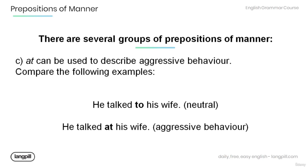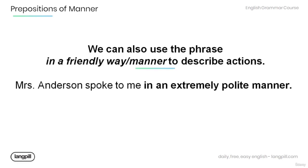Group C: 'at'. 'At' can be used to describe aggressive behavior. Compare the following examples: 'He talked to his wife' — neutral behavior. 'He talked at his wife' — the preposition of manner 'at' describes aggressive behavior. Note that we can also use the phrase 'in a friendly way or manner' to describe actions, as in: 'Mrs. Anderson spoke to me in an extremely polite manner.'